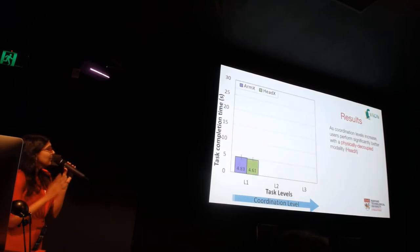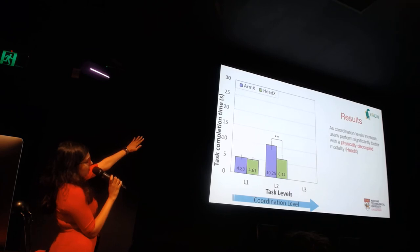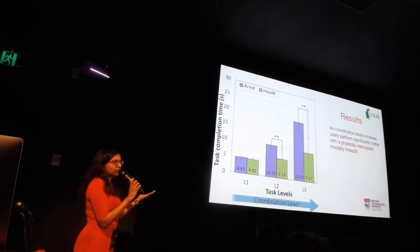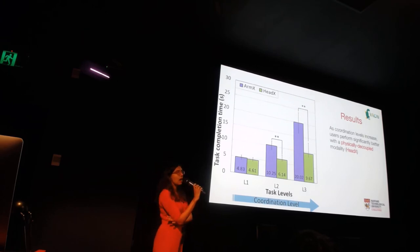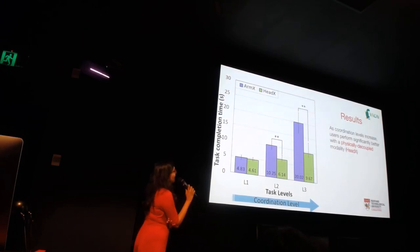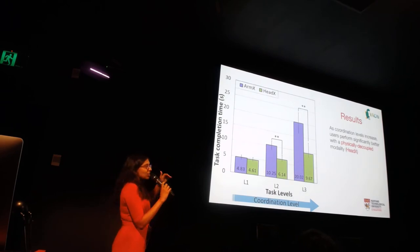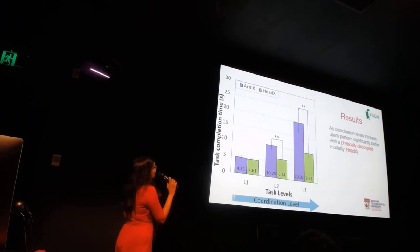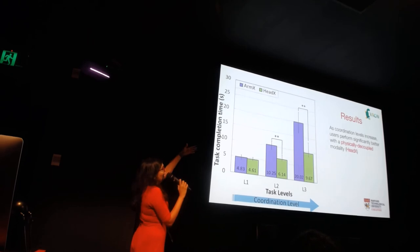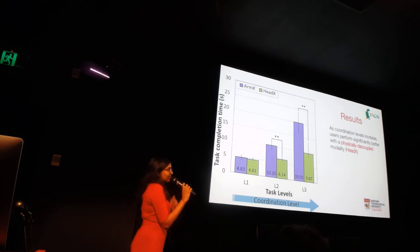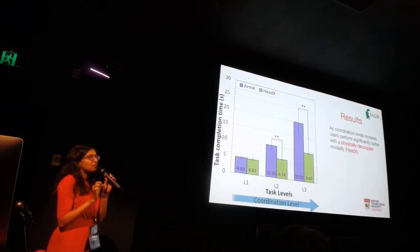The results were very interesting. We compared task completion time per positioning task. For the first level, there was not much of a difference between ArmX and HeadX in terms of performance. But as the coordination level increased, we found that users performed increasingly faster using HeadX compared to ArmX, and it became more and more difficult for users to perform these tasks using ArmX. This difference was very significant.